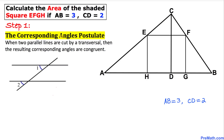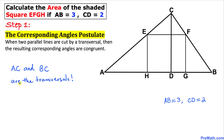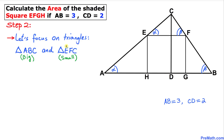Now let's recall the corresponding angles postulate: when two parallel lines are cut by a transversal, the resulting corresponding angles are congruent. For example, angle 1 and angle 2 are corresponding angles and they are congruent. In our case, AC and BC are the transversals. So if I call this angle alpha, the corresponding angle is also alpha. Likewise, if I call this angle beta, the corresponding angle is also beta.